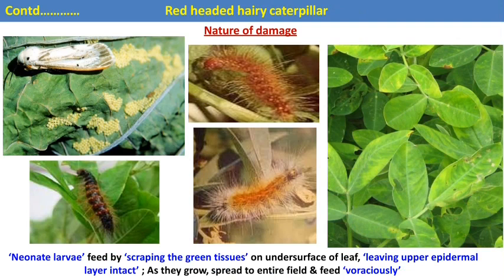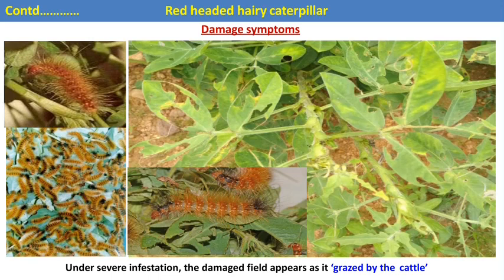The female moth lays eggs on the leaf surface. After hatching, neonate larvae initially feed by scraping green tissue on the undersurface of leaves, leaving the upper epidermal layer intact. As they grow, late instar larvae feed voraciously on the leaf surface. In case of severe infestation, complete defoliation occurs and the infested field looks like it has been grazed by cattle.